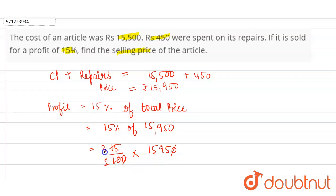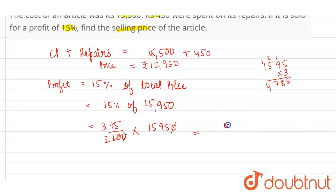So 10 cancelled, now 5 into 2 is 10, 5 into 3 is 15. So the profit is 5×1595×3. This is equal to: 3 into 5 is 15, 1 carry; 3 into 9 is 27, 28, 2 carry; 3 into 5 is 15, 16, 17, 1 carry; 3 into 1 is 3 plus 1 is 4. So 4,785 divided by 2.